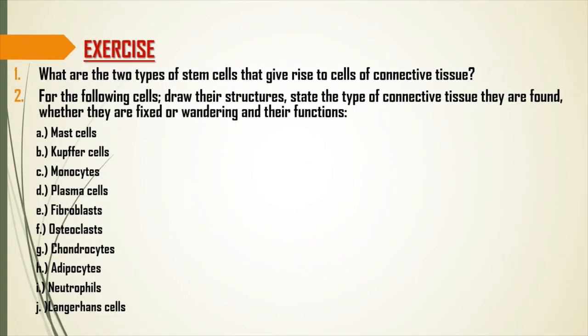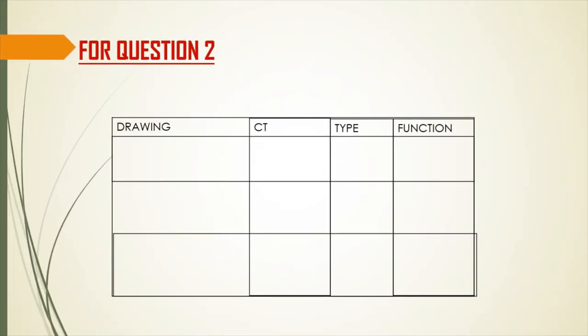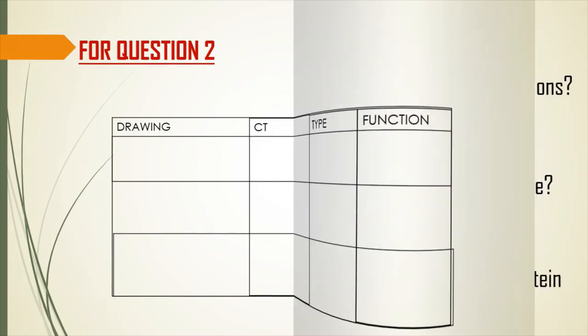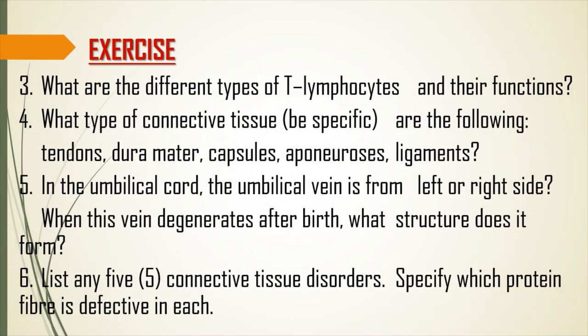Use a table format for question two, with columns for connective tissue type, cell type, and function of cells. Question three: what are the types of T-lymphocytes and their functions? Question four: what type of connective tissue are tendons, dura mater, capsules, aponeuroses, and ligaments? Question five: in the umbilical cord, is the umbilical vein on the left or right, and what structure does it form after it degenerates after birth? Question six: list any five connective tissue disorders and specify which protein fiber is affected in each.